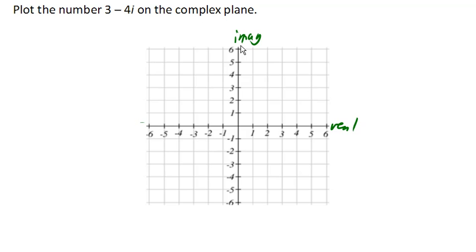The idea is if you just want to plot a number, you just need a number line. But if you want to plot a complex number that has both a real and an imaginary part, then you're going to need two different directions. And that's why we have the complex plane.